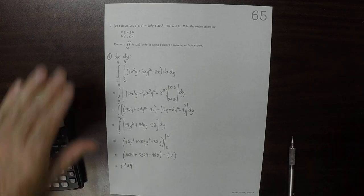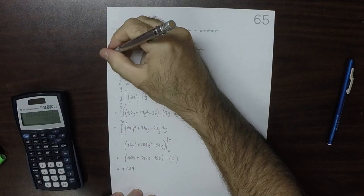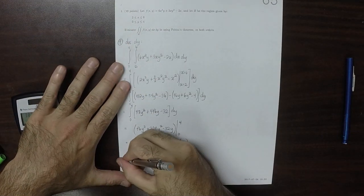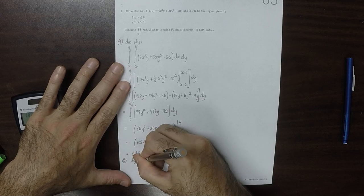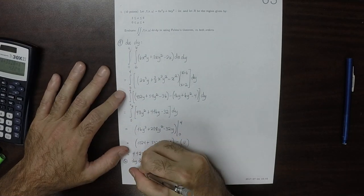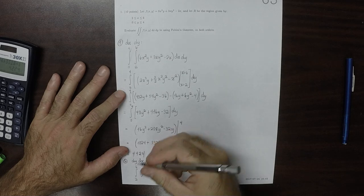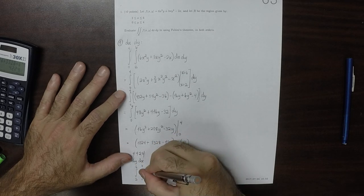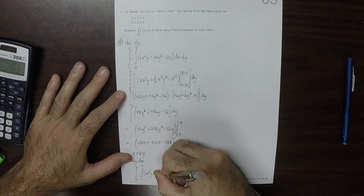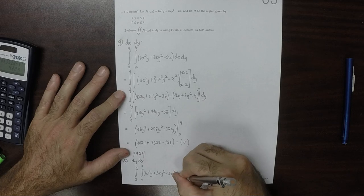That's if we do it in order dx dy. If we do it in the other order, dy dx, so x is the outer integral, the result would be integral with x on the outside from 2 to 6, y is on the inside 0 to 4, and then that same thing, 6x squared y plus 3xy squared minus 2x, and y's are on the inside, so dy dx.